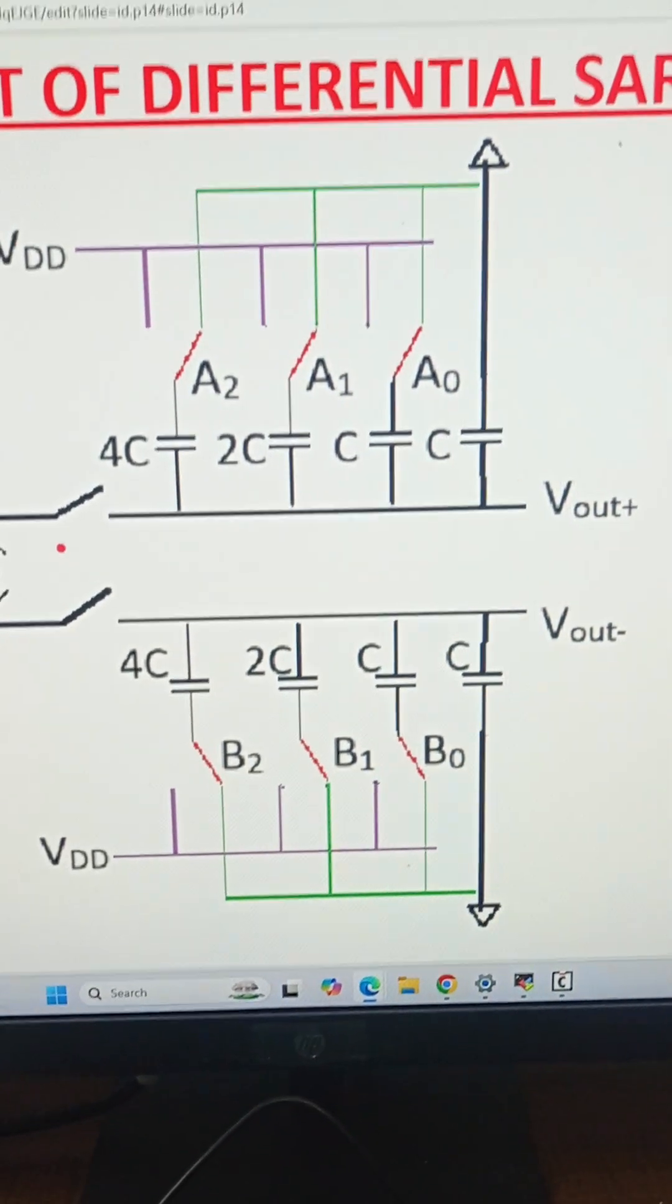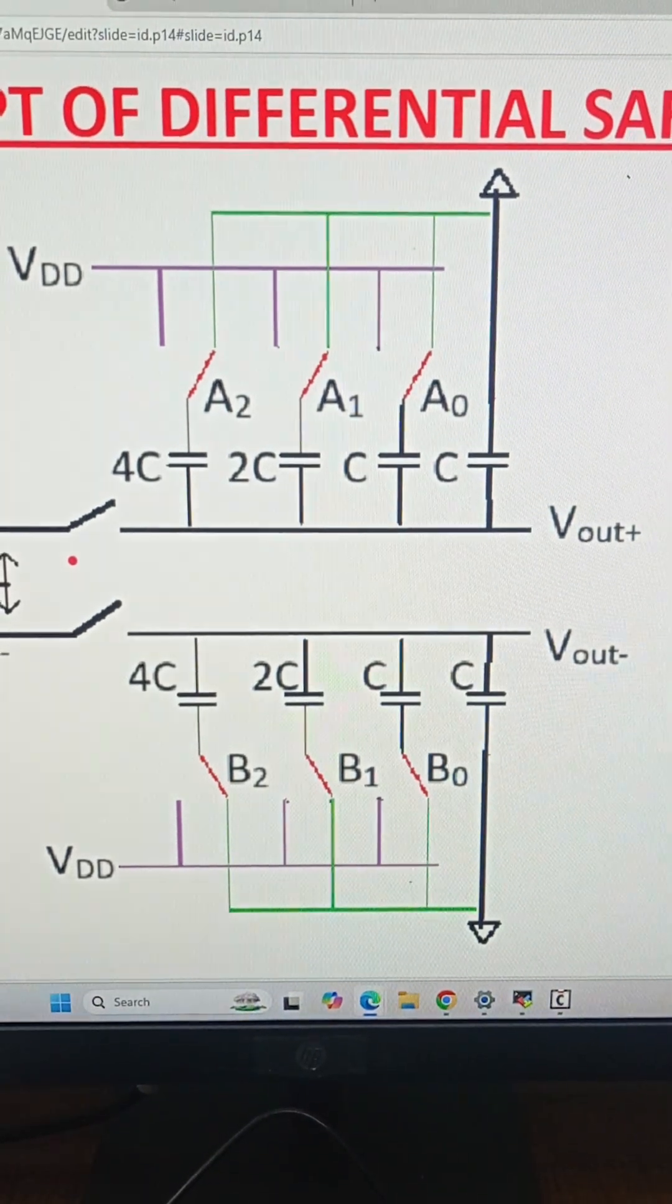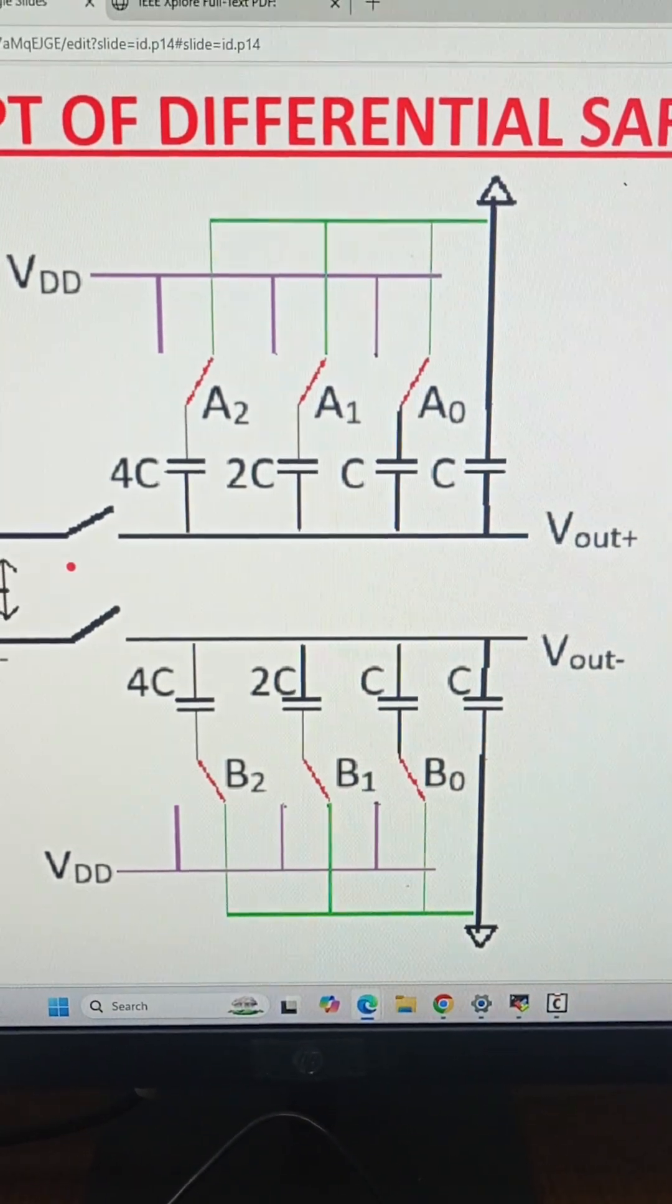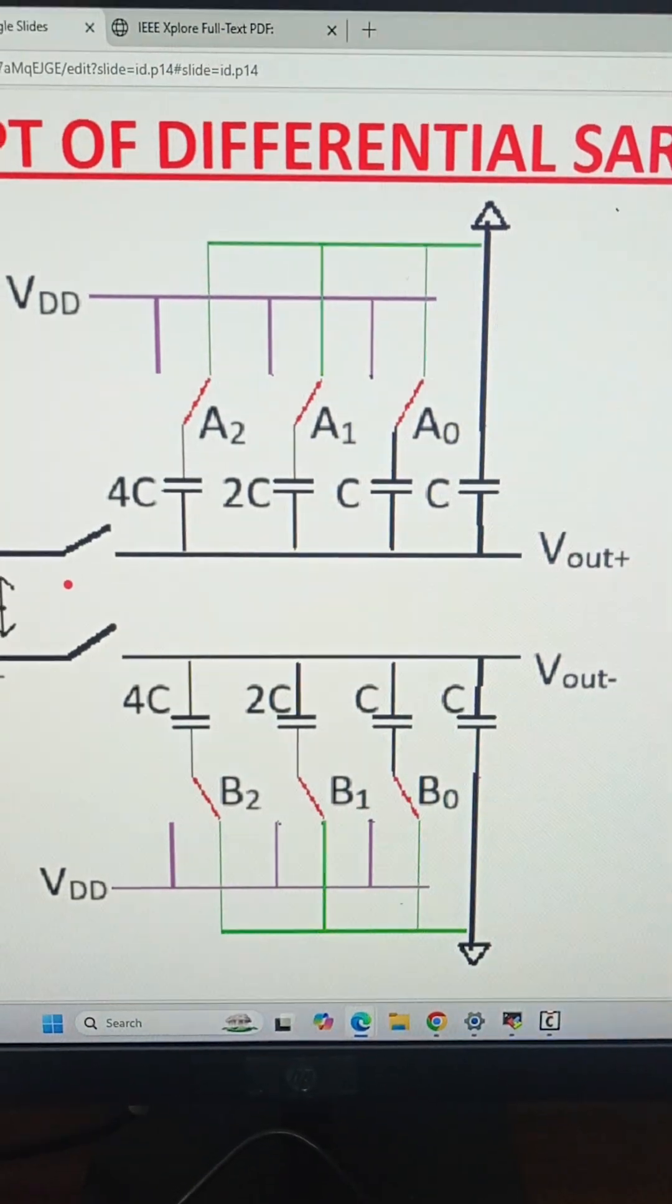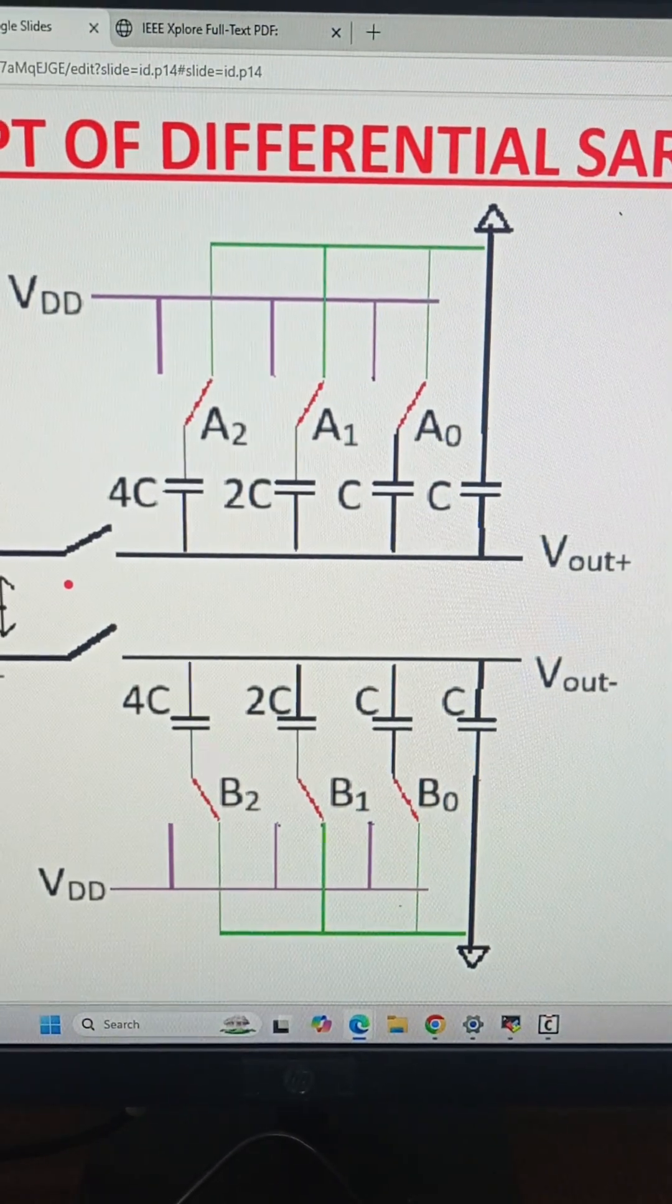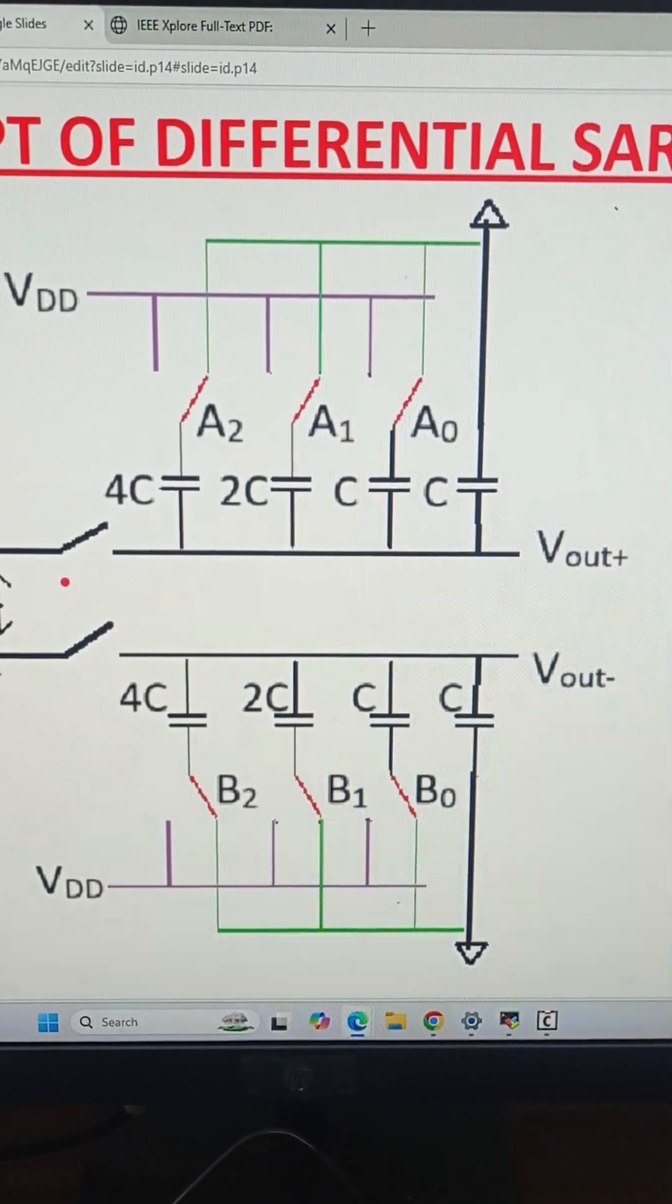The new value of V_out- becomes 0.9 volts while V_out+ is unchanged at 0.6 volts. Now V_out- is greater than V_out+.